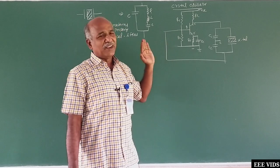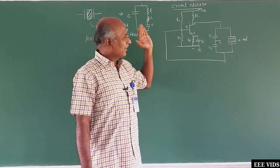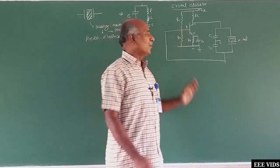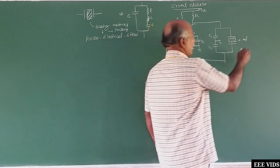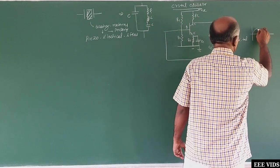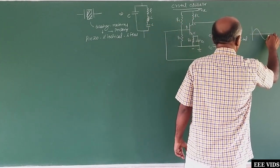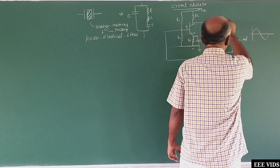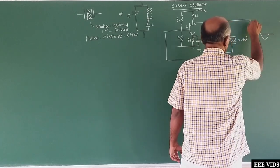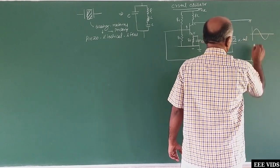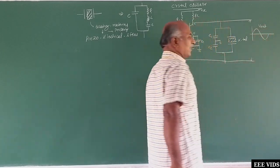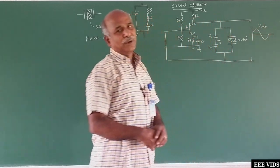That is the crystal oscillator. It is similar to a Colpitts oscillator where the inductance is replaced by the crystal. The output here is sinusoidal. The crystal oscillator produces a sinusoidal output.